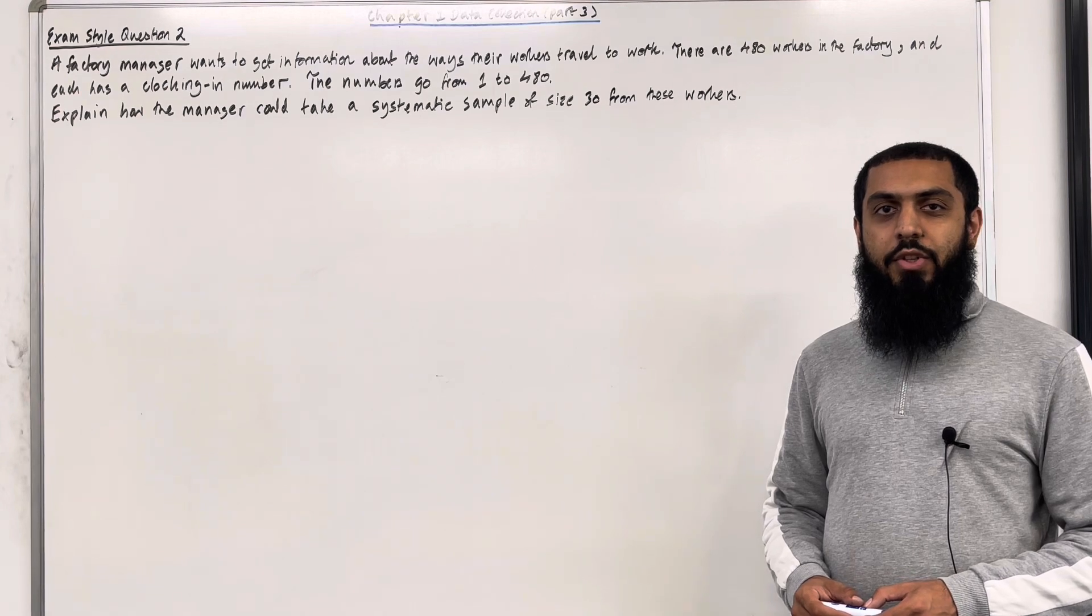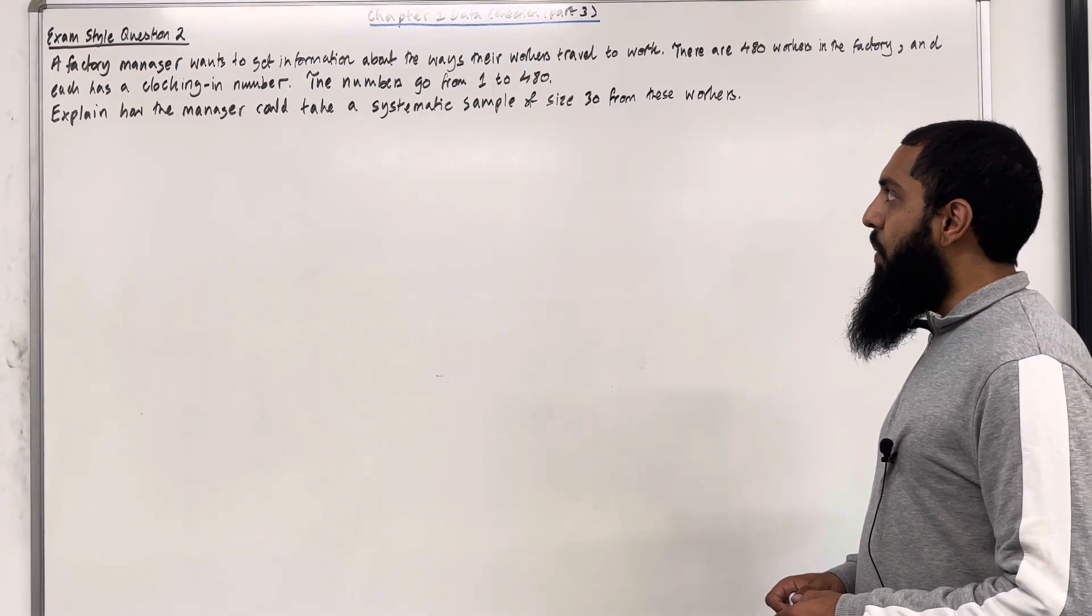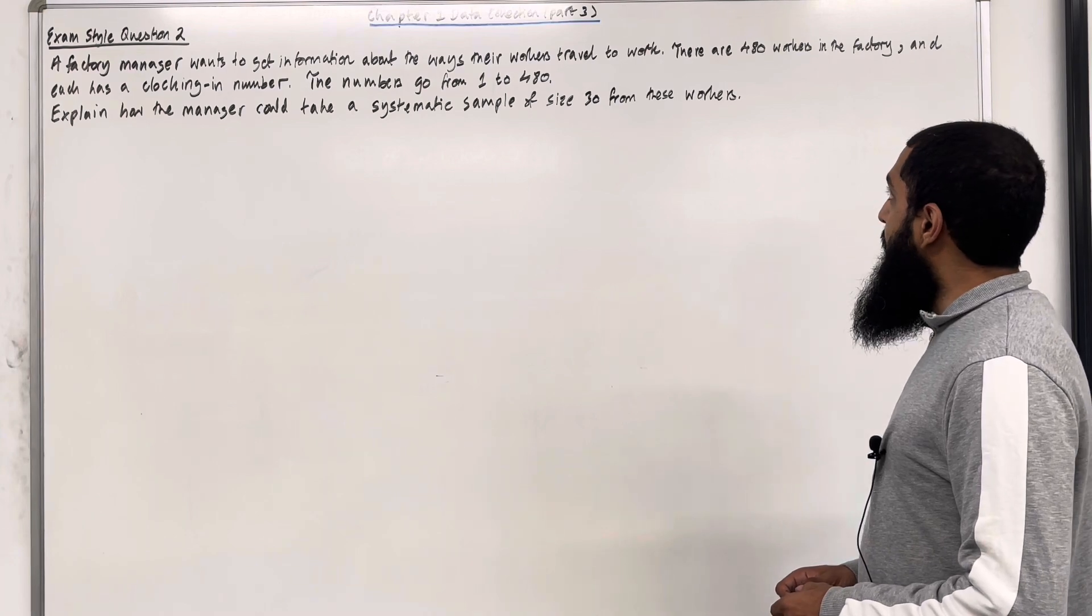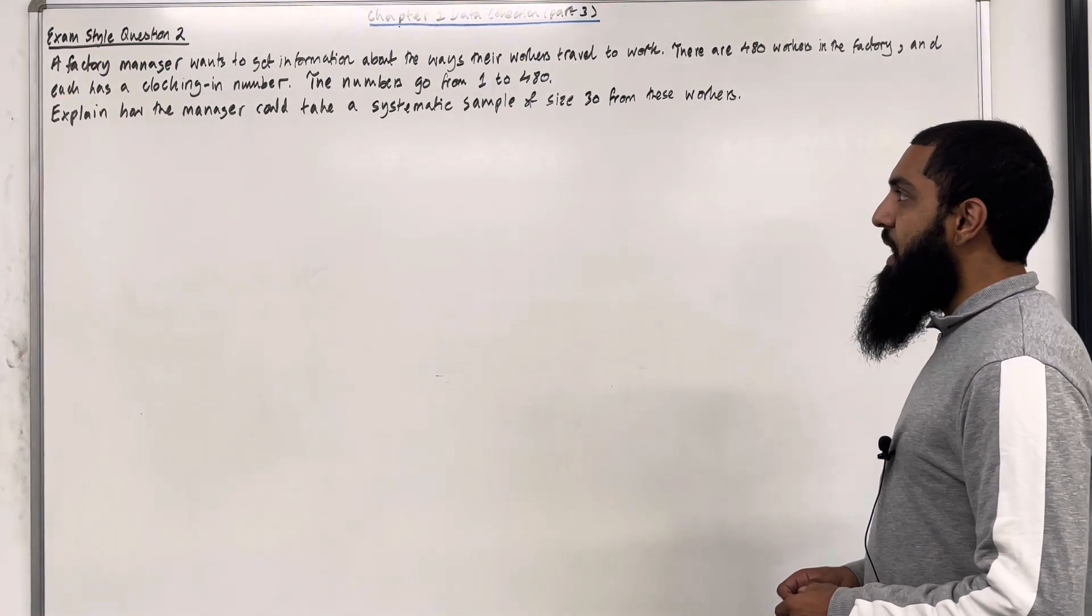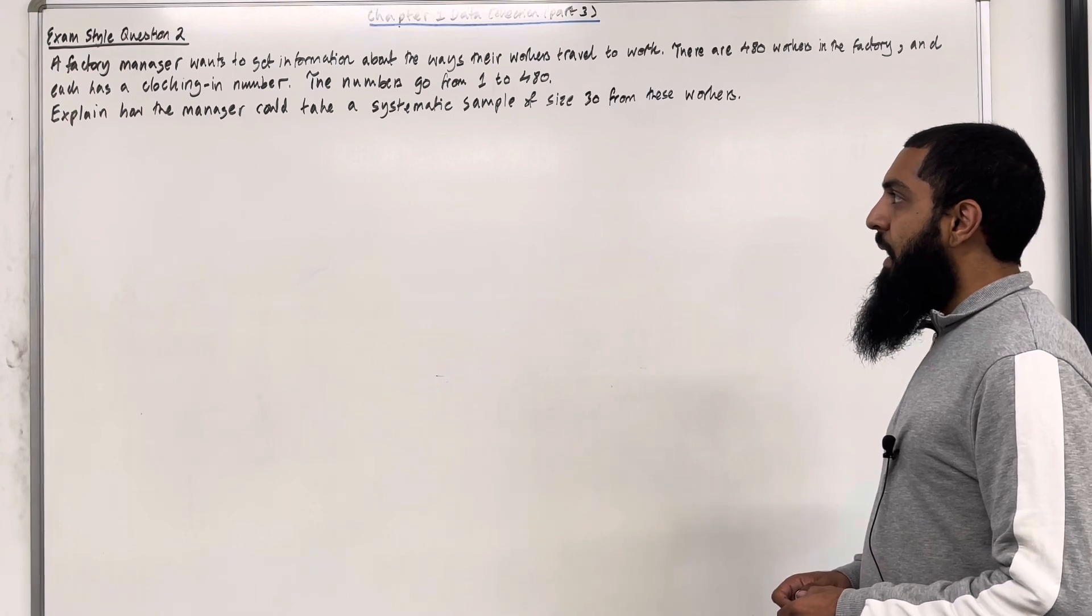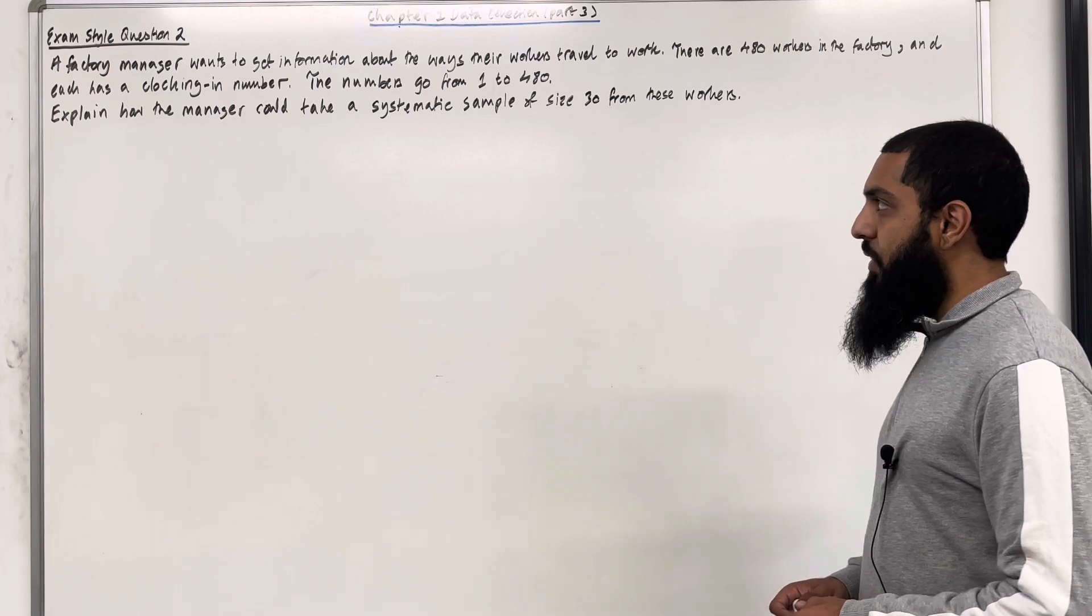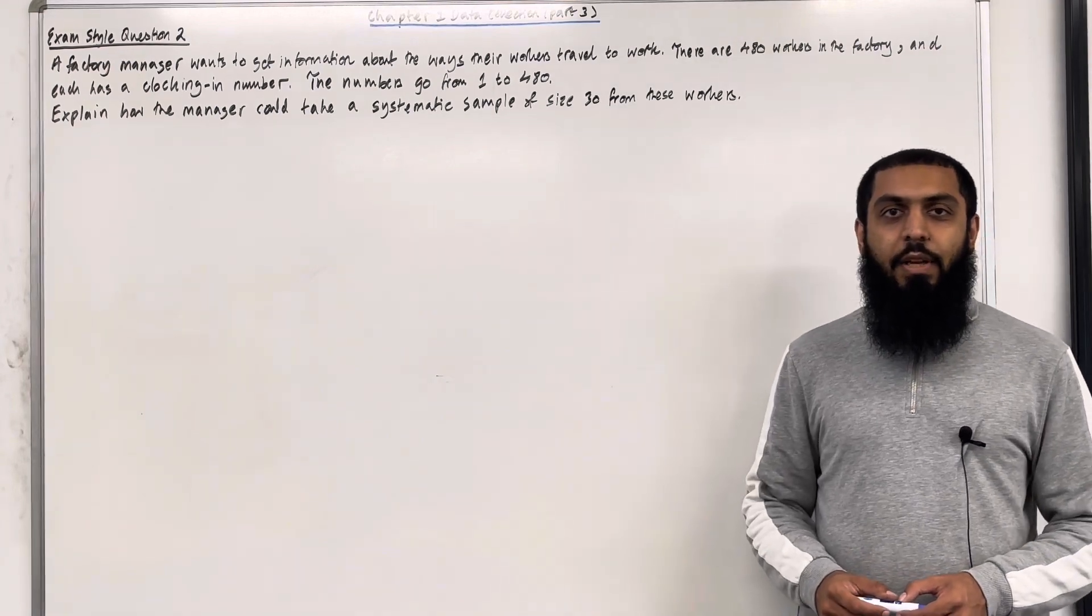Moving on to exam study question 2. A factory manager wants to get information about the ways their workers travel to work. There are 480 workers in the factory and each has a clocking in number. The numbers go from 1 to 480. Explain how the manager could take a systematic sample of size 30 from these workers. Let's have a look at the solution.